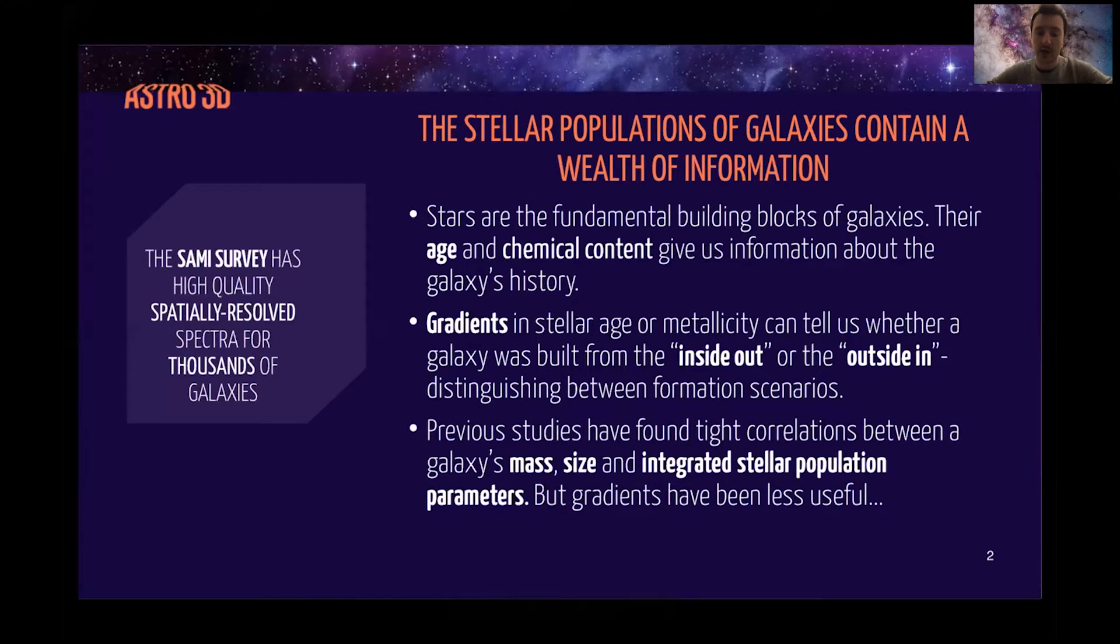The stellar populations of galaxies contain a wealth of information. Stars really are the building blocks of galaxies, so we can learn about what's happened over a galaxy's history by looking at the star's age and their chemical content. Furthermore, it's not just the central values which matter. Gradients in stellar population parameters tell us whether a galaxy was built from the inside out or the outside in.